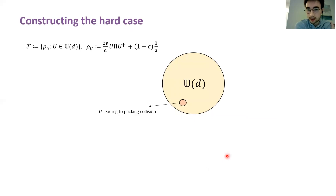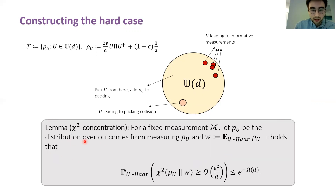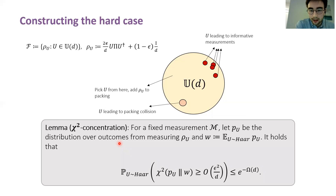The following idea is the crux of our result: can we pick a set of states — a very difficult ensemble for quantum state discrimination — such that the chi-squared divergence terms are all very small? It turns out we can. Recall the packing construction from the non-adaptive case. For the adaptive case with a finite number of measurement settings, we claim there's also a very small subset of unitary operators that lead to informative measurements. Our strategy is to construct the difficult ensemble using quantum states that lie outside both of these subsets.